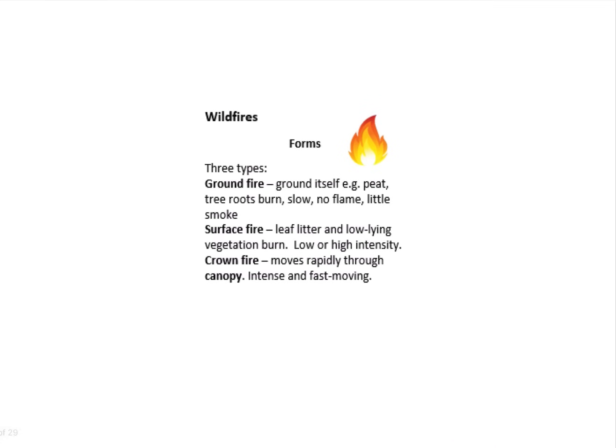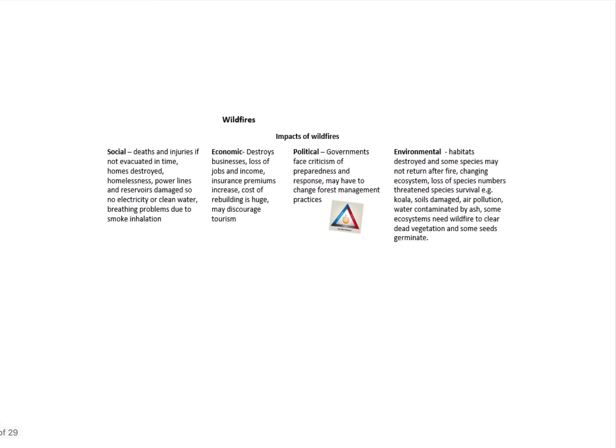Last but not least, we can consider wildfires. You've got three types—ground fires on the ground itself, surface fire which happens in leaf litter, and crown fire which moves rapidly through the canopy. Crown fires normally are the intense and fast moving ones.